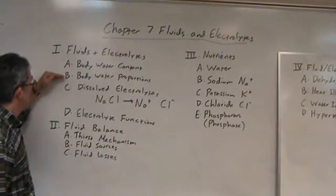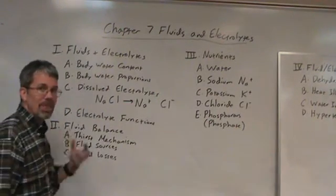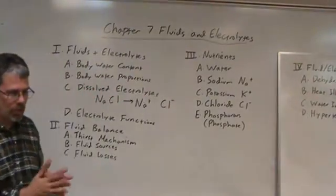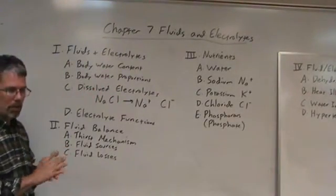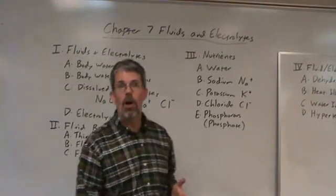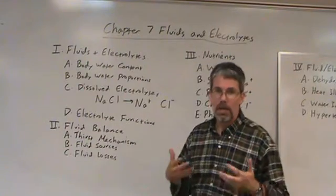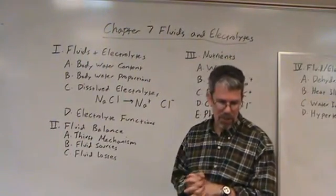The body water proportions include those inside cells, that's your cell cytoplasm, that makes up some two-thirds of all of your body water, that's intracellular, and the remaining one-third are extracellular fluids, that includes things like blood plasma, interstitial fluid, and several other examples provided.